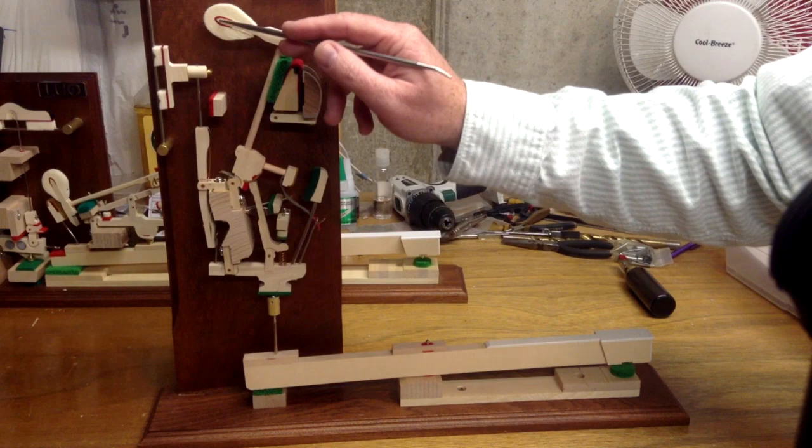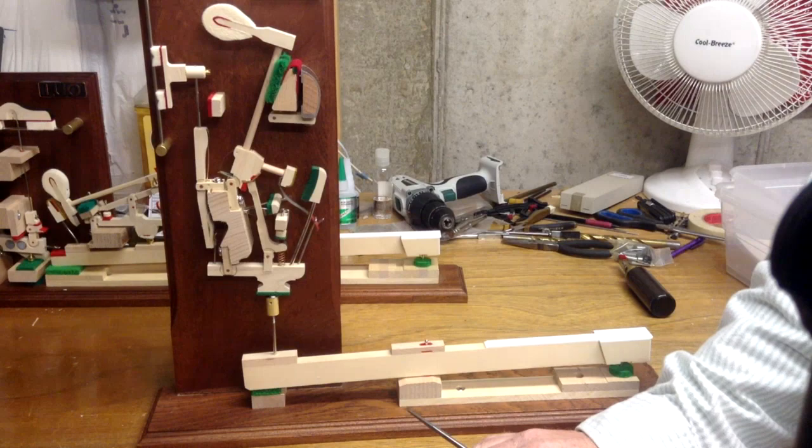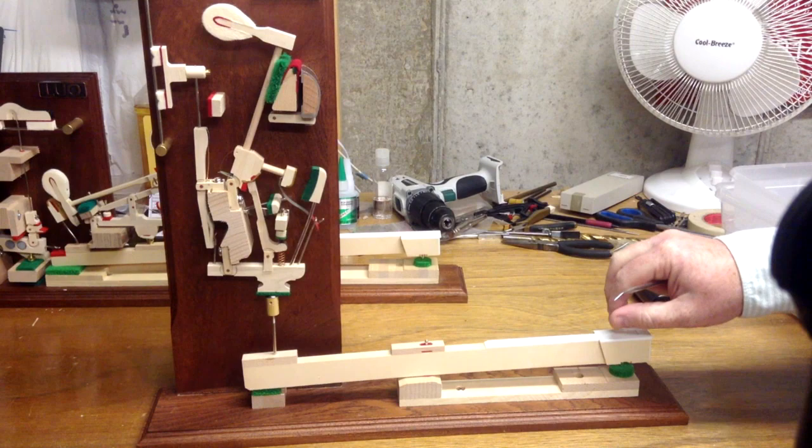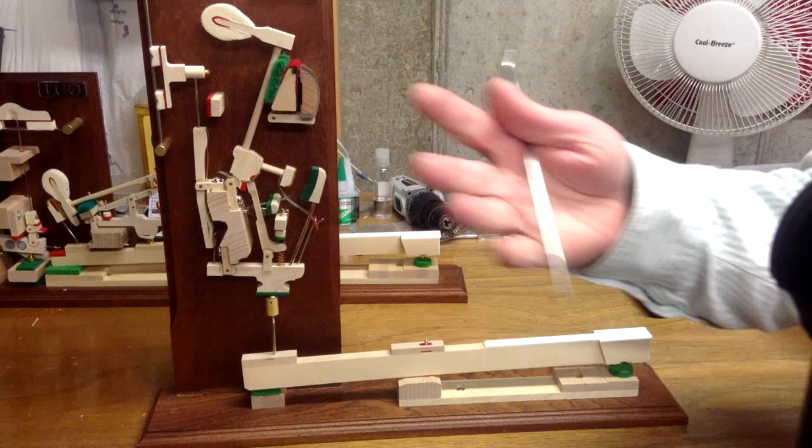Then in this model, this right here would be representing the string. Obviously it's a thick rod there, but in the model it's representing. As you can see, the hammer goes forward and hits the string and the string would vibrate and cause the sound.